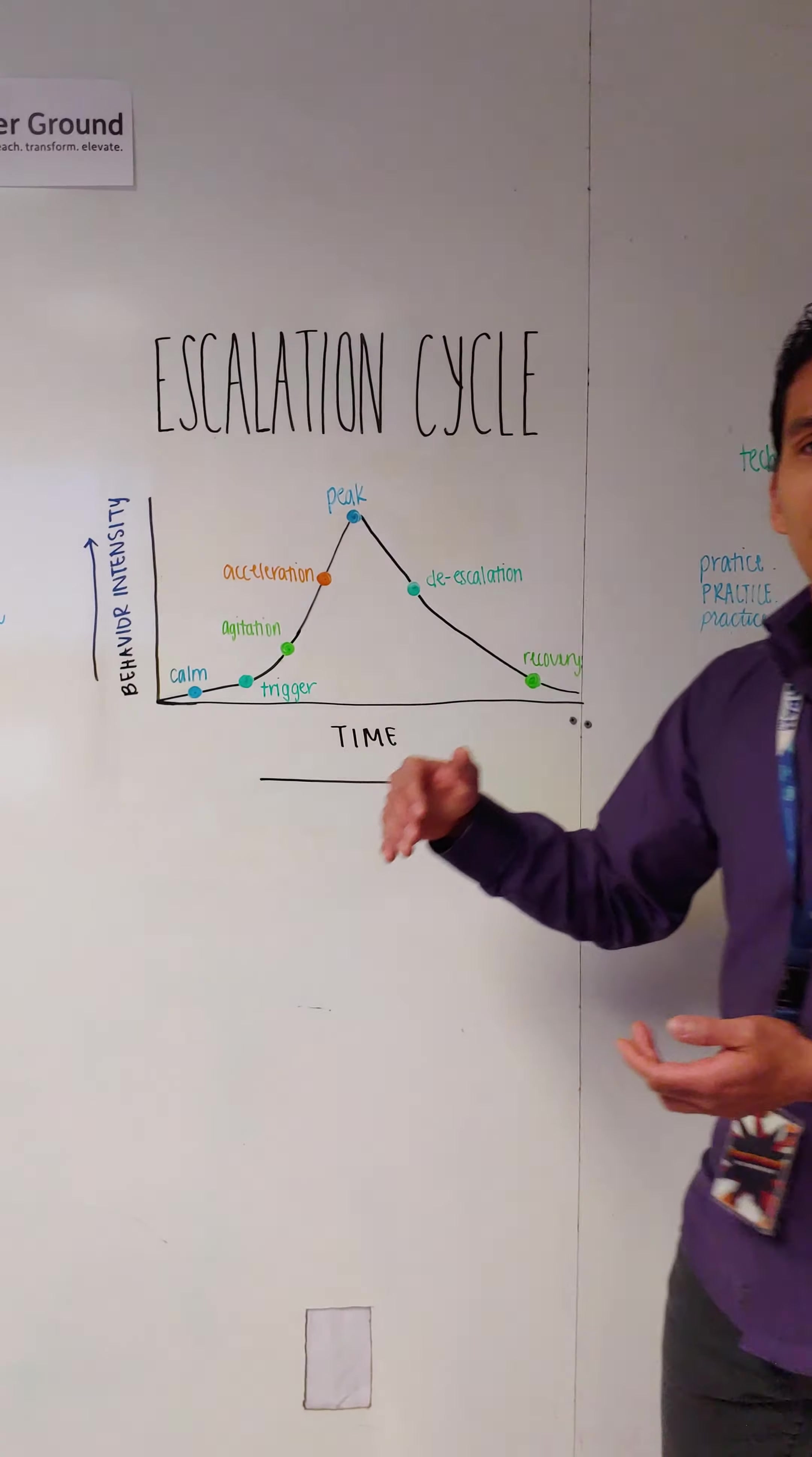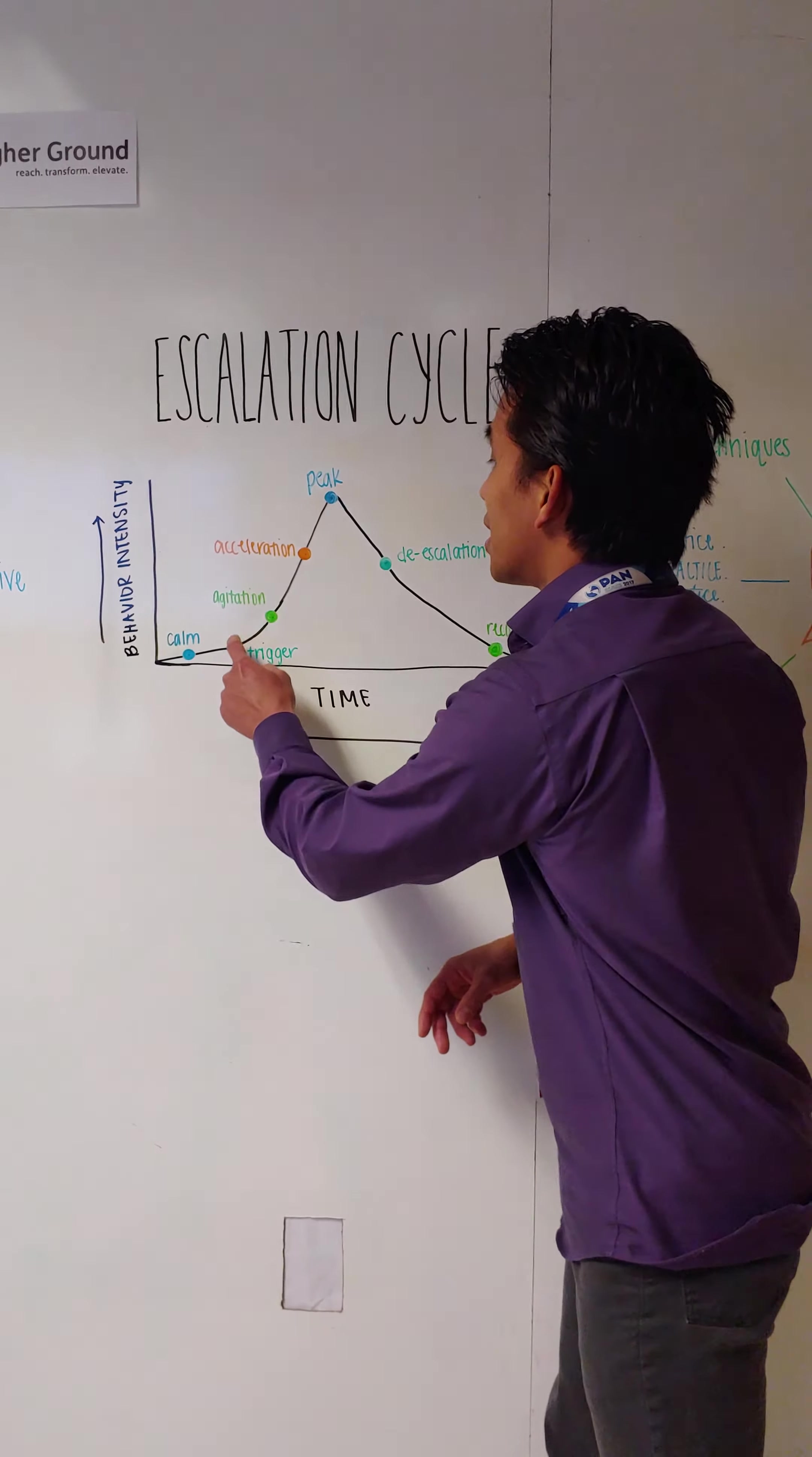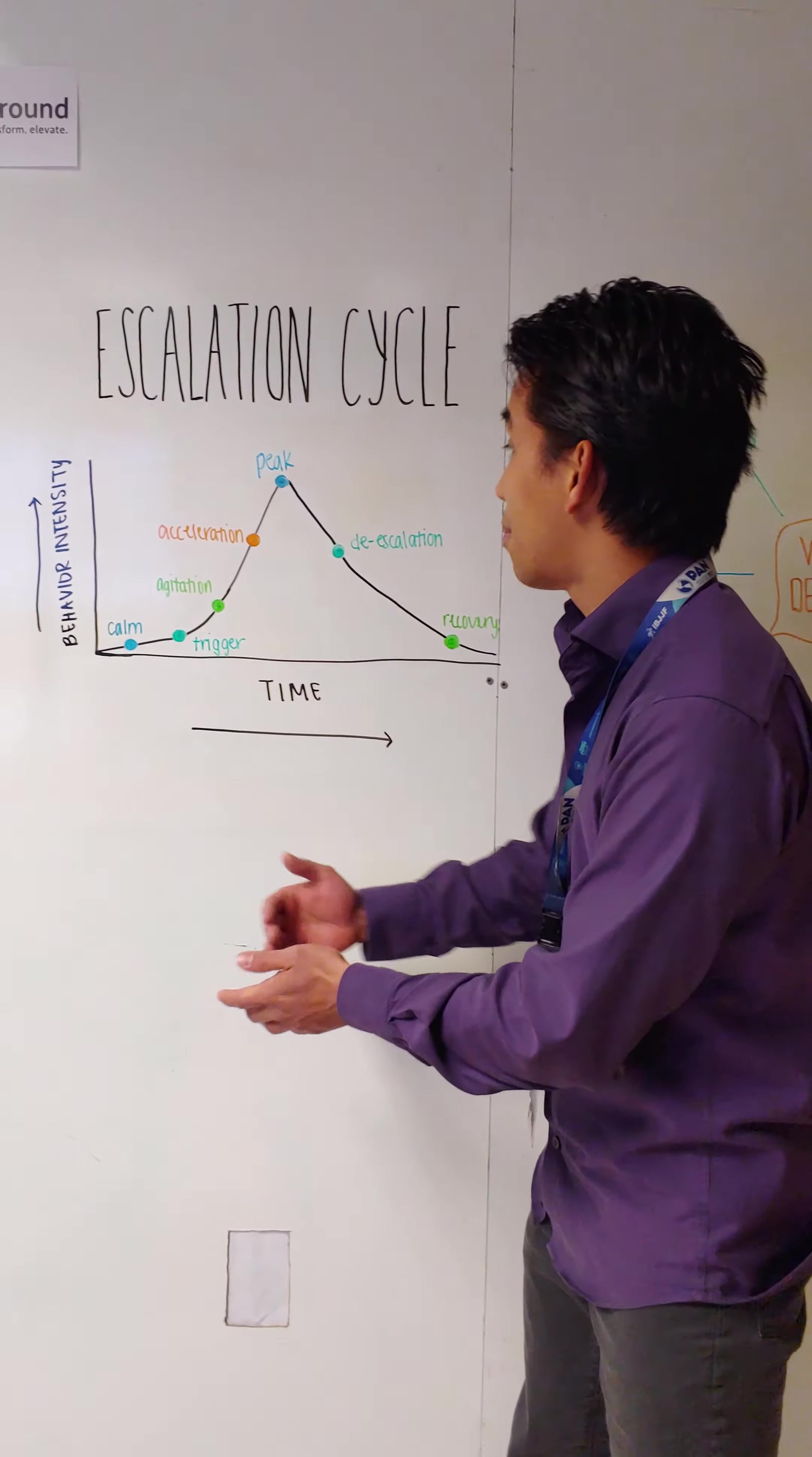So, before we practice de-escalation and teach you the technique, it's important for us to understand the escalation cycle. So, the escalation cycle starts off with calm, right? And then, something usually happens that triggers the behavior. Now, these triggers can be a lot of things. It can be something as simple as a loud noise or it can be something as complex as they woke up and there's all these stressors that's already going on at home and they're worried about it.